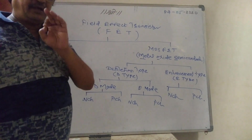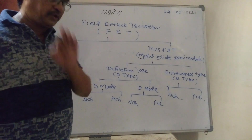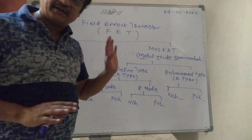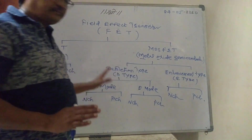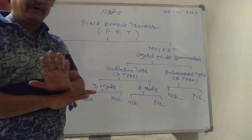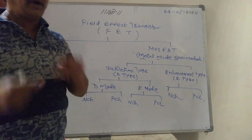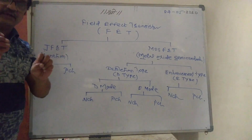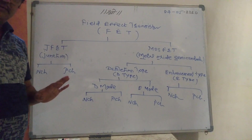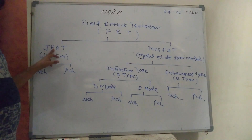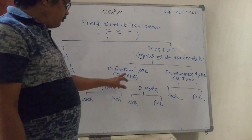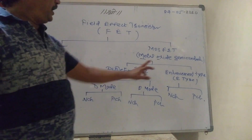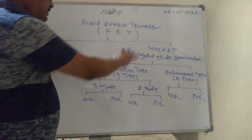I will explain construction in two to three lines, working in one paragraph, and then draw the characteristics. For a six-month exam: explain JFET, explain Depletion-type mode, explain Enhancement-type mode, or explain working and draw characteristics. Whatever question is asked, you have to explain everything I am giving. We will study N Channel for JFET, and for MOSFET, Depletion-type with both modes and Enhancement-type N Channel.